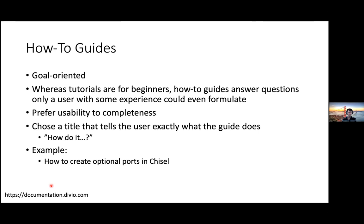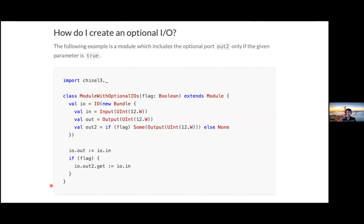How-to guides are important as well, similar to tutorials but very goal-oriented. Whereas a tutorial is for a beginner, a how-to guide is something you'd only think about once you've been using the project for a while. They provide concrete steps to accomplish a goal — some of the easiest ones to write because you just find a question someone's asked you and write how to do it. For example, how do I create an optional port? Here's an example from the Chisel website: how do I create optional I/O? It's not a lot of theory — just a basic example showing the question and how to do it.